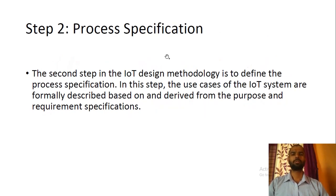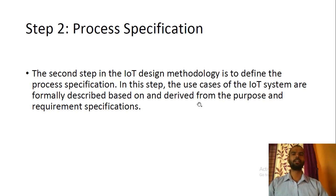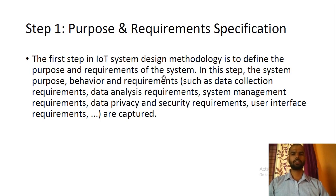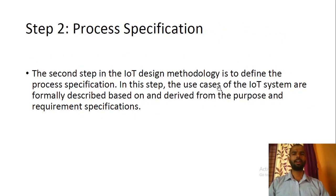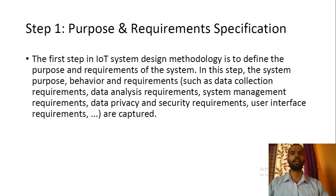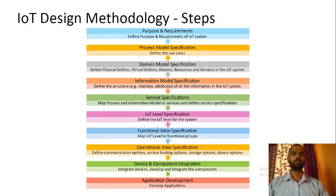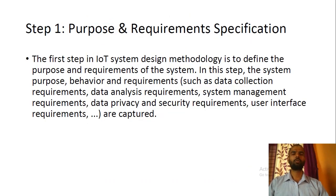The second step is Process Specification. In this, the actual process flow or process workflow of the system is highlighted. For these steps we are going to take the example of the home automation system.